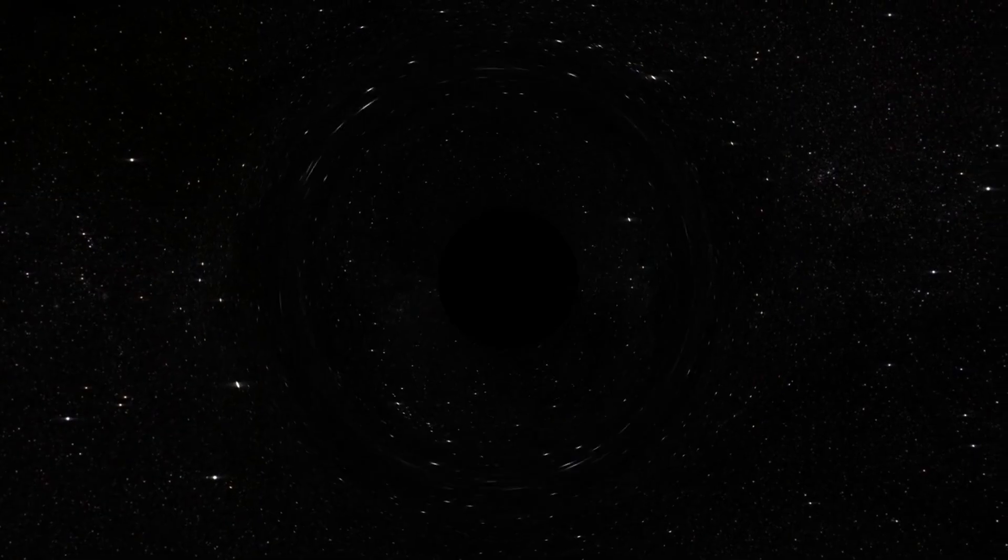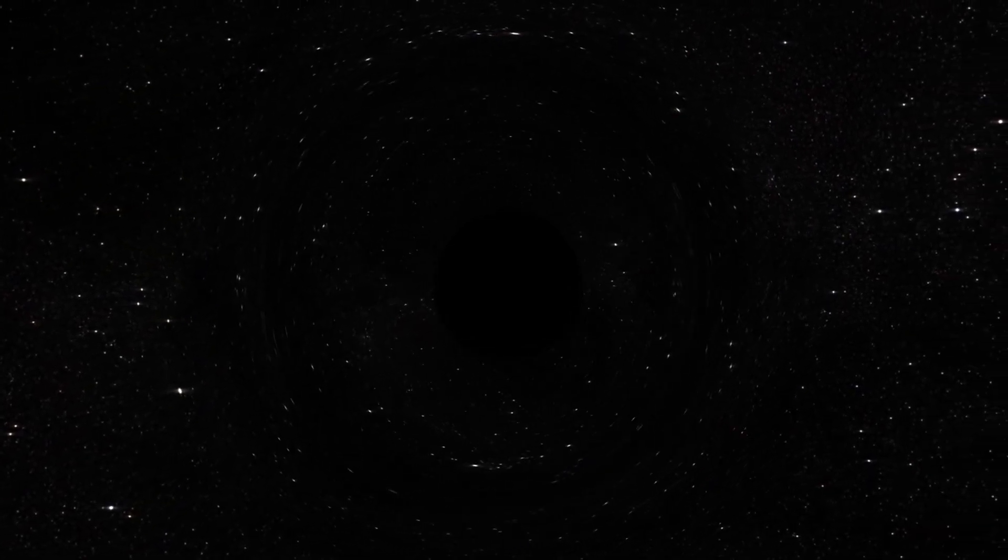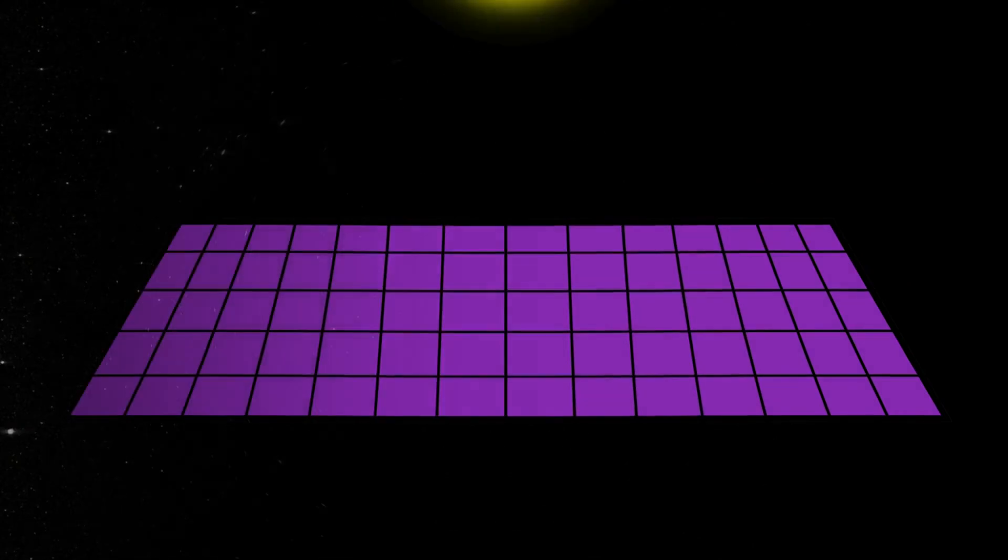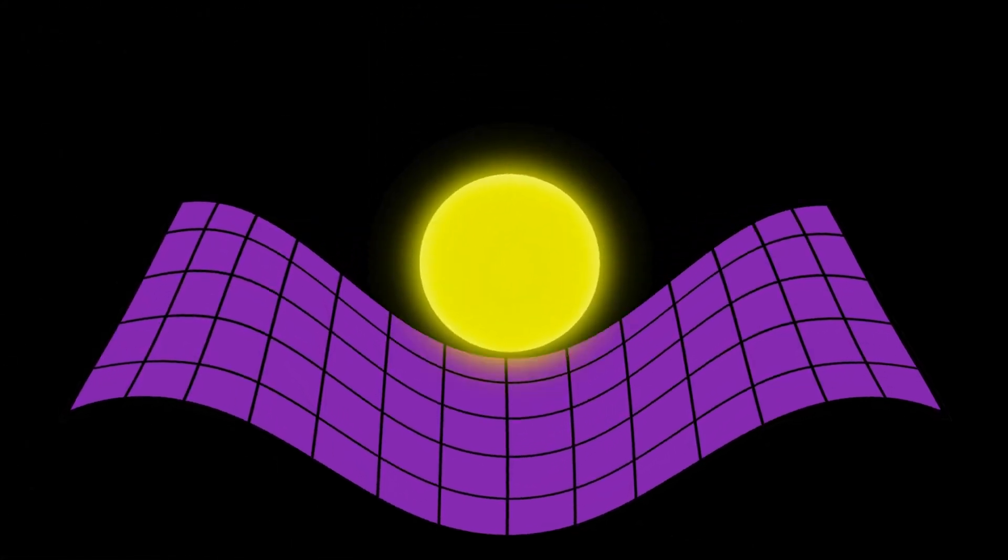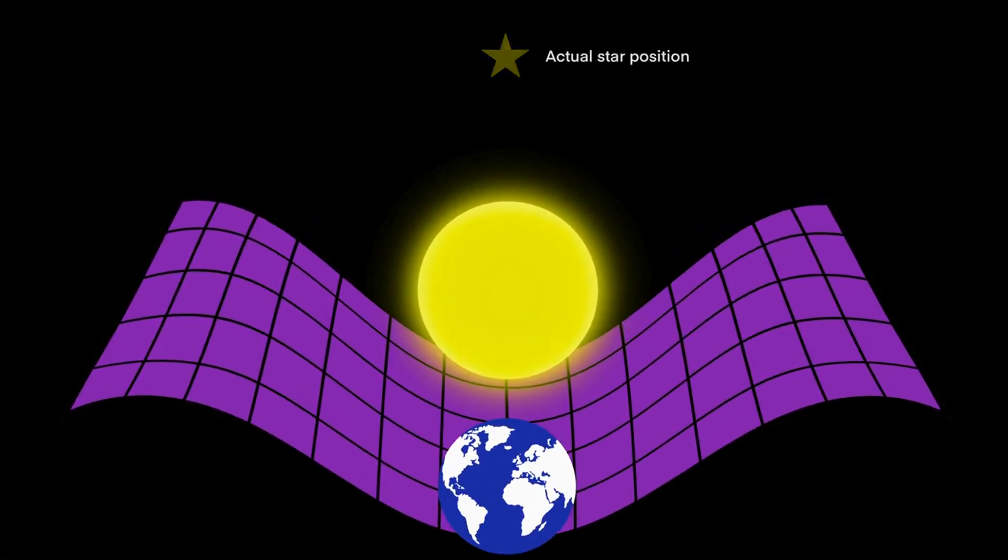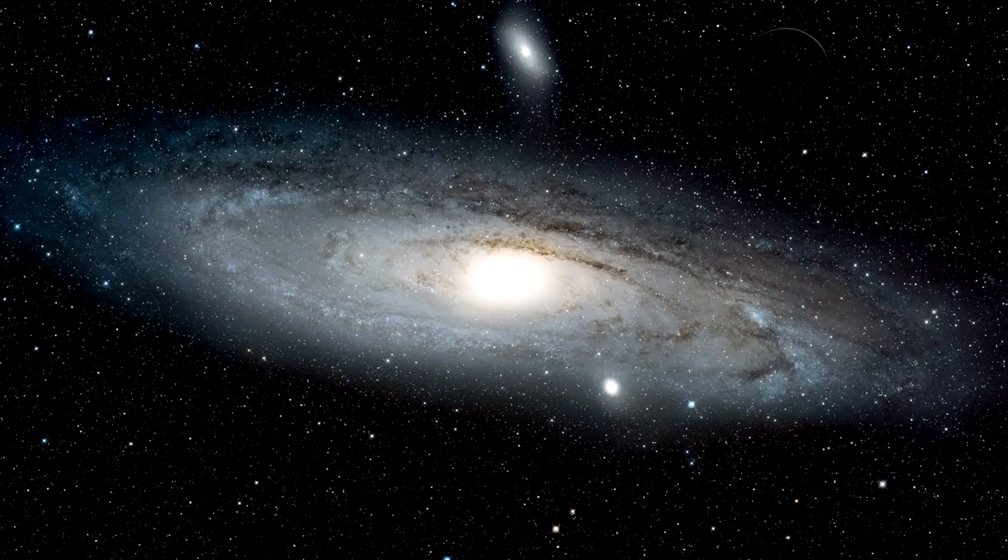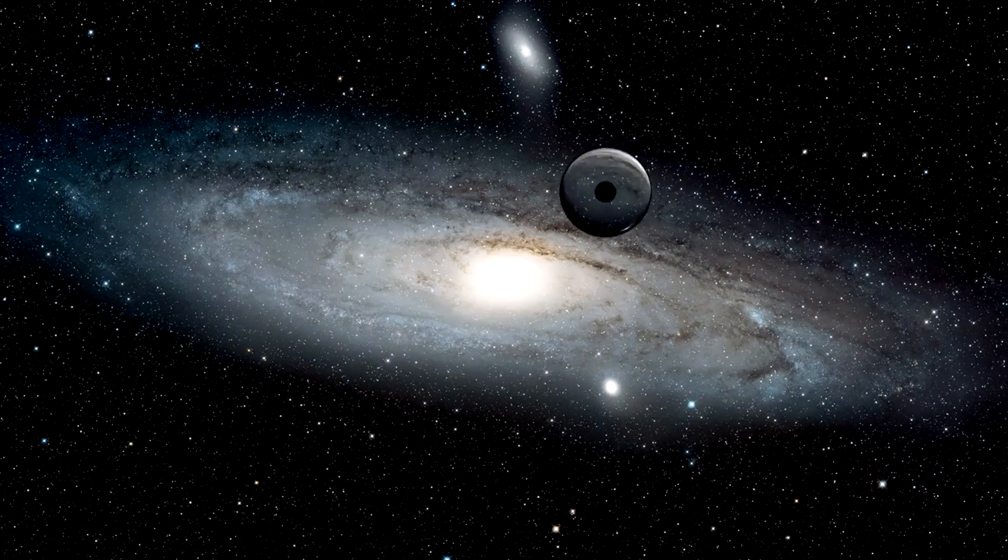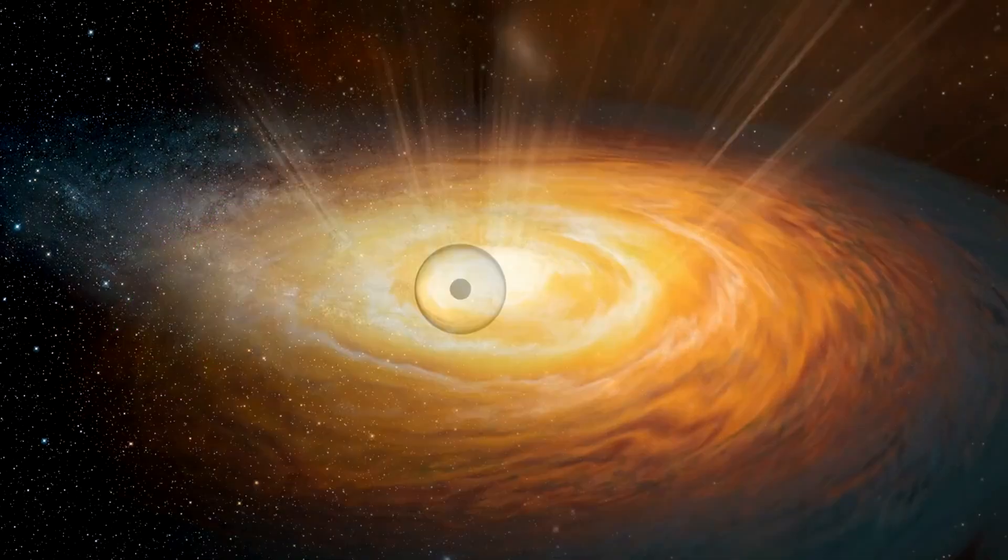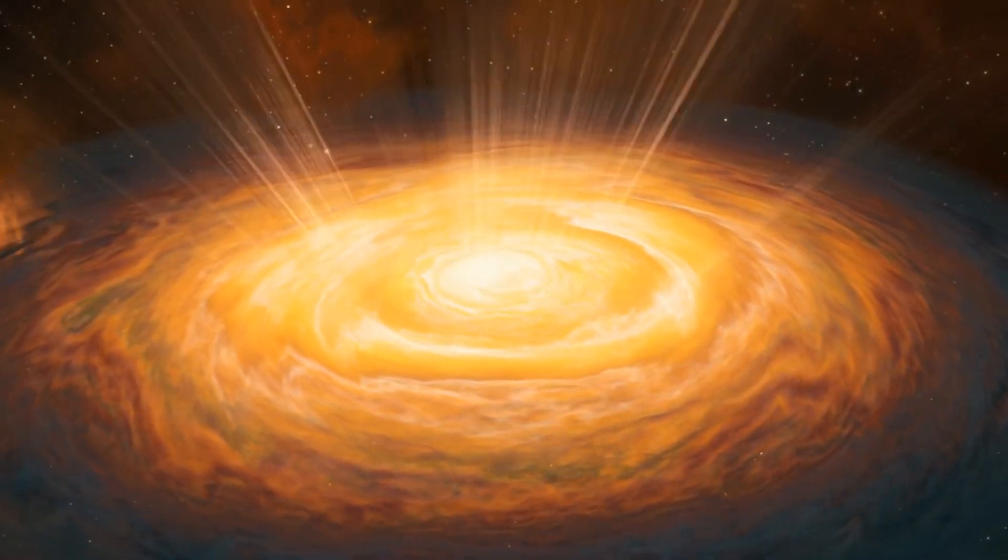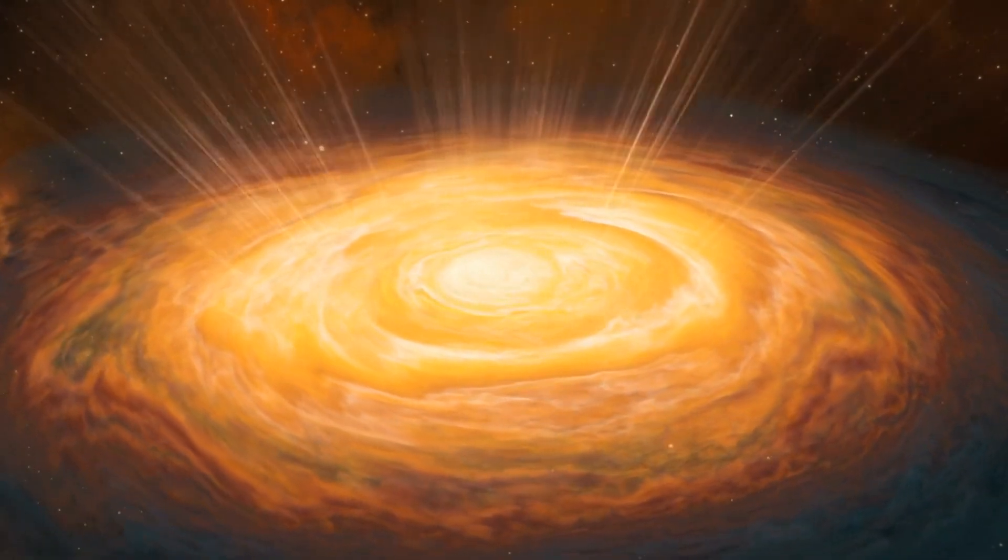The identification of this supermassive black hole was made possible through the phenomenon of gravitational lensing. According to Einstein's theory of general relativity, massive objects like galaxy clusters can warp the fabric of space-time, bending the light from more distant objects. This effect can magnify and reveal objects that would otherwise be too faint to detect. In this case, the gravitational lensing caused by a galaxy cluster magnified the light from the distant quasar, allowing astronomers to study it in detail.